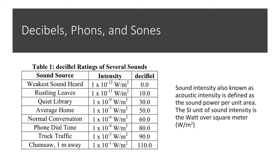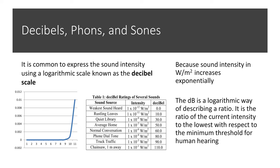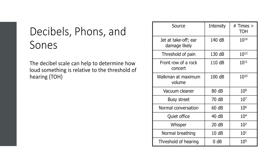So how do we quantify and measure sound? Sound intensity, or acoustic intensity, is defined as the sound power per unit area. The SI unit is the watt per meter squared. However, this isn't entirely useful, so it's common to express sound intensity using the logarithmic scale — the decibel scale — because sound intensity in watts per meter squared increases exponentially. The decibel is a logarithmic ratio of the current intensity to the lowest intensity, with respect to the minimum threshold for human hearing.